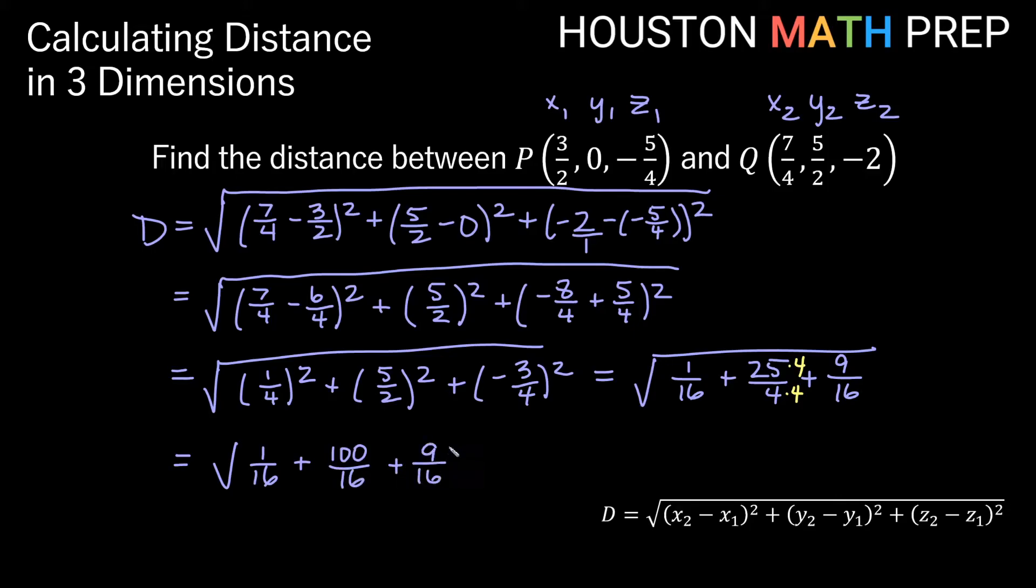That will give us then 1/16 plus we'll get 100/16 plus 9/16. So we have 1 plus 100 plus 9 on the tops of these. That will give us 110/16. And we can think of this again as separate roots. So think of this as the square root of 110 over the square root of 16. We probably don't know the square root of 110, but we do know the square root of 16. So we get √110/4. And it turns out we can't actually simplify root 110. So we'll go ahead and leave this as √110/4. That's the distance between our P and our Q here.